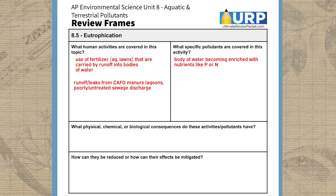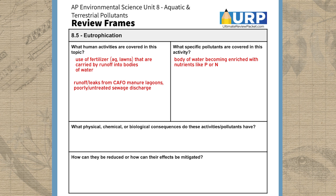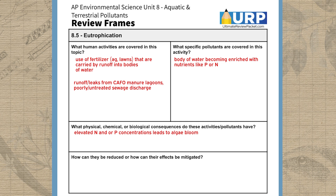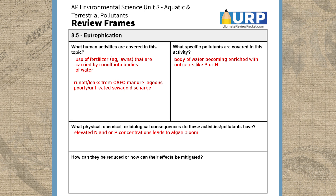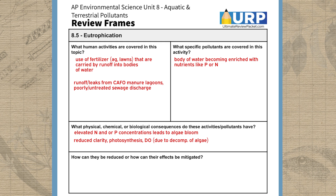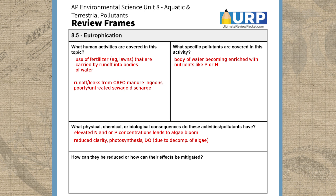Now let's look at the physical, chemical, and biological consequences of eutrophication. The basic chemical consequence is elevated nitrogen and/or phosphorus levels in the water. If growing conditions like sunlight and temperature are right, these elevated nutrient levels can trigger a cascade of biological consequences starting with an algae bloom. This explosion in algae population reduces water clarity and blocks sunlight from reaching plants beneath the surface, which in turn reduces photosynthesis and can kill those plants. Once the algae use up all the excess nutrients, they experience a die-off.